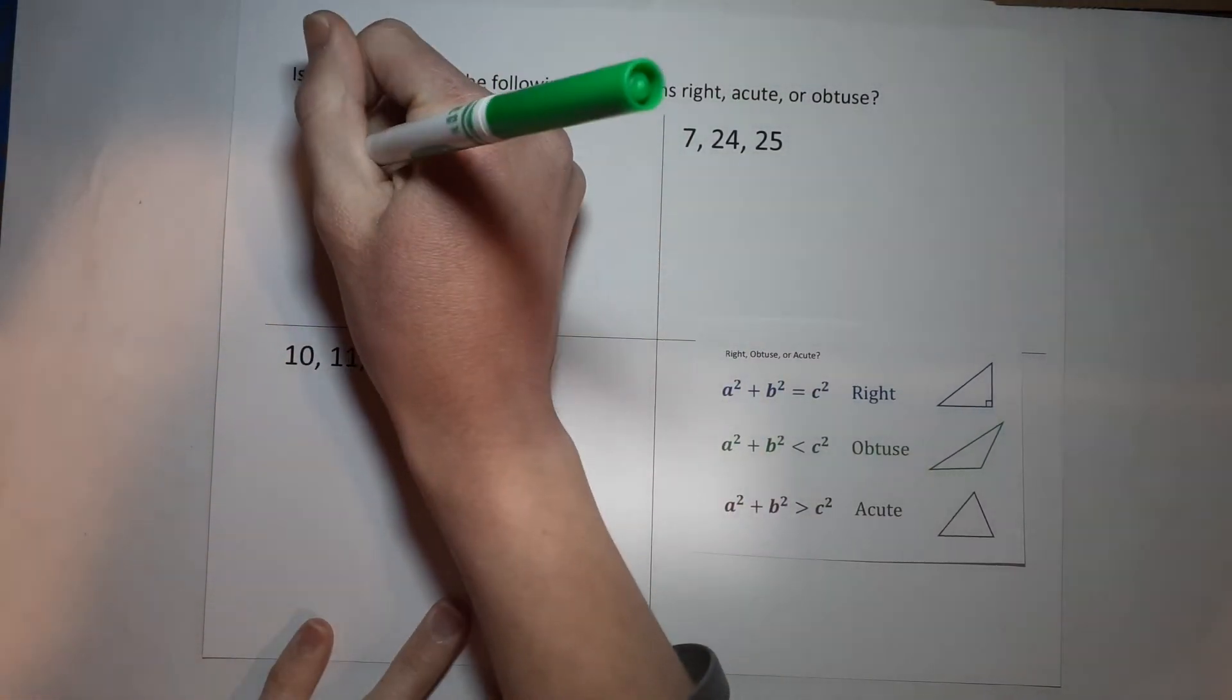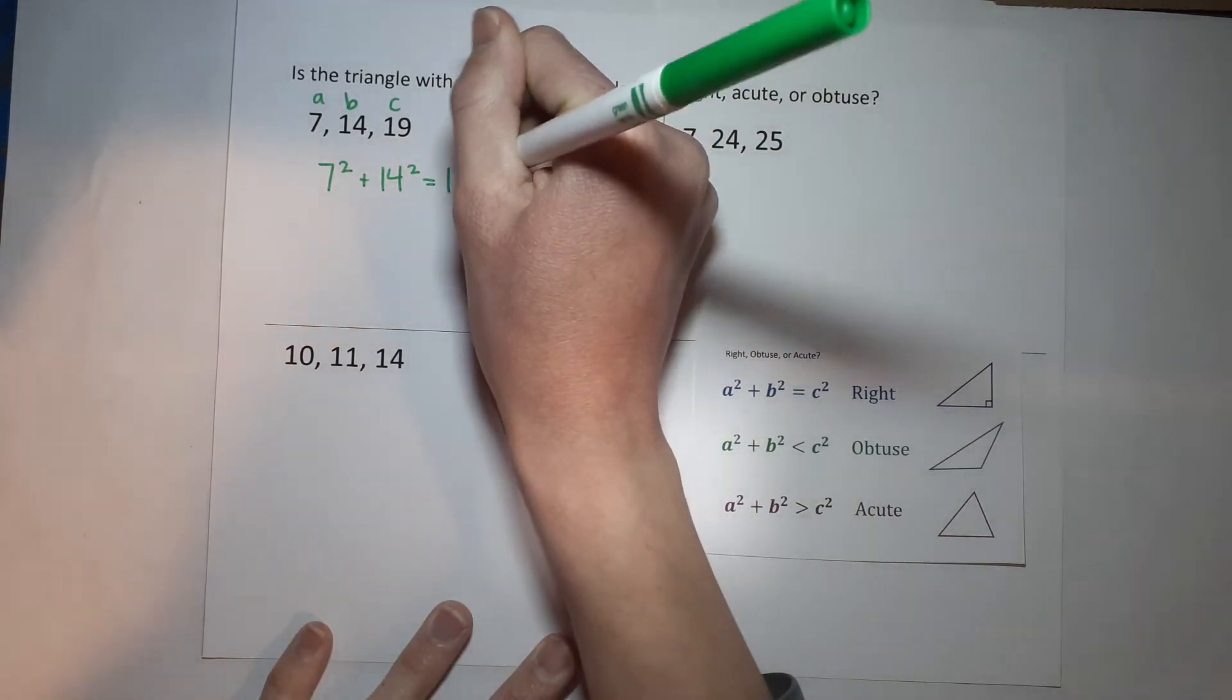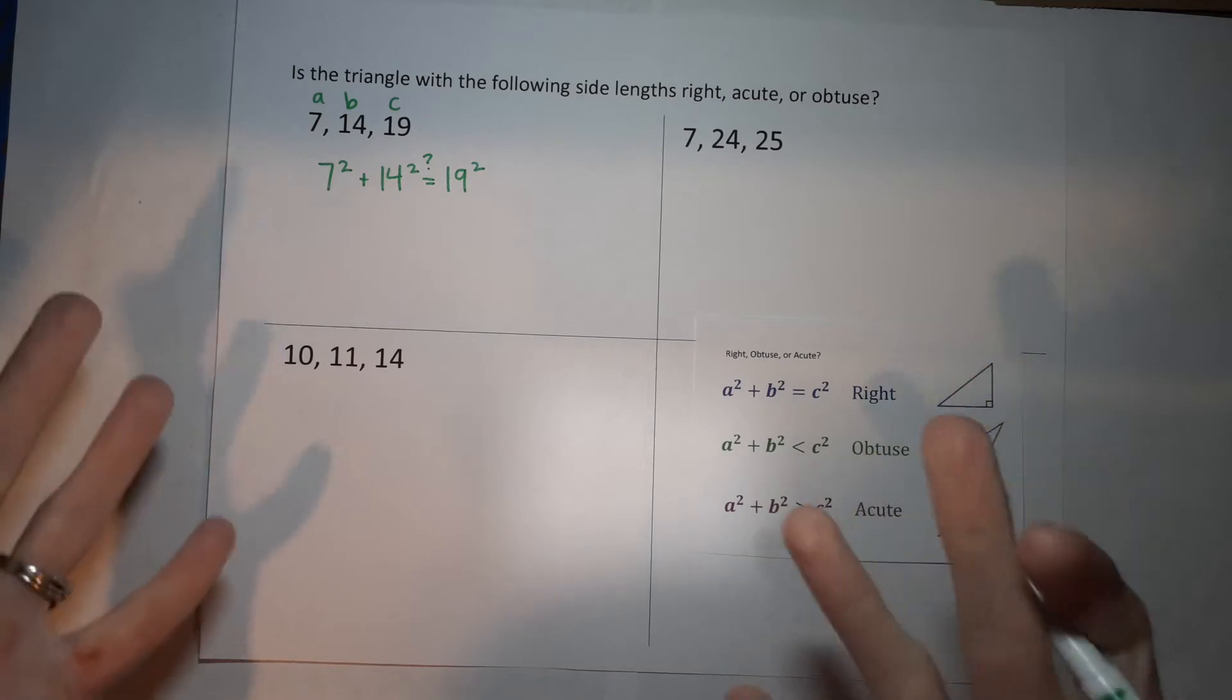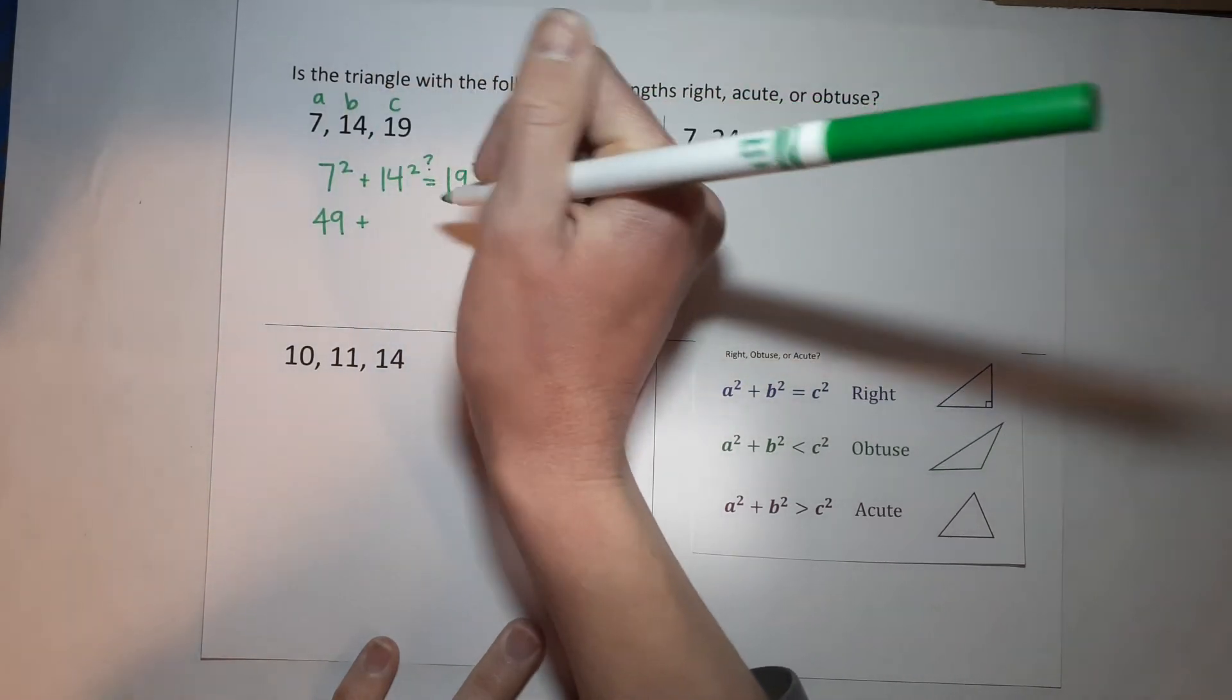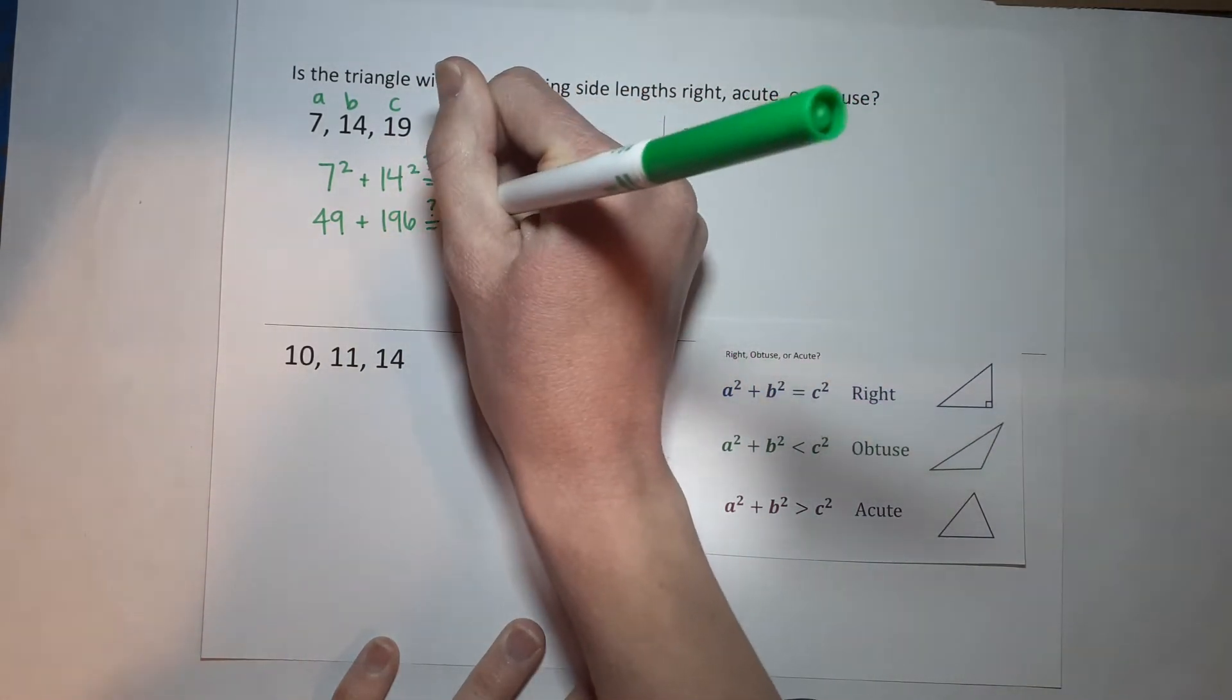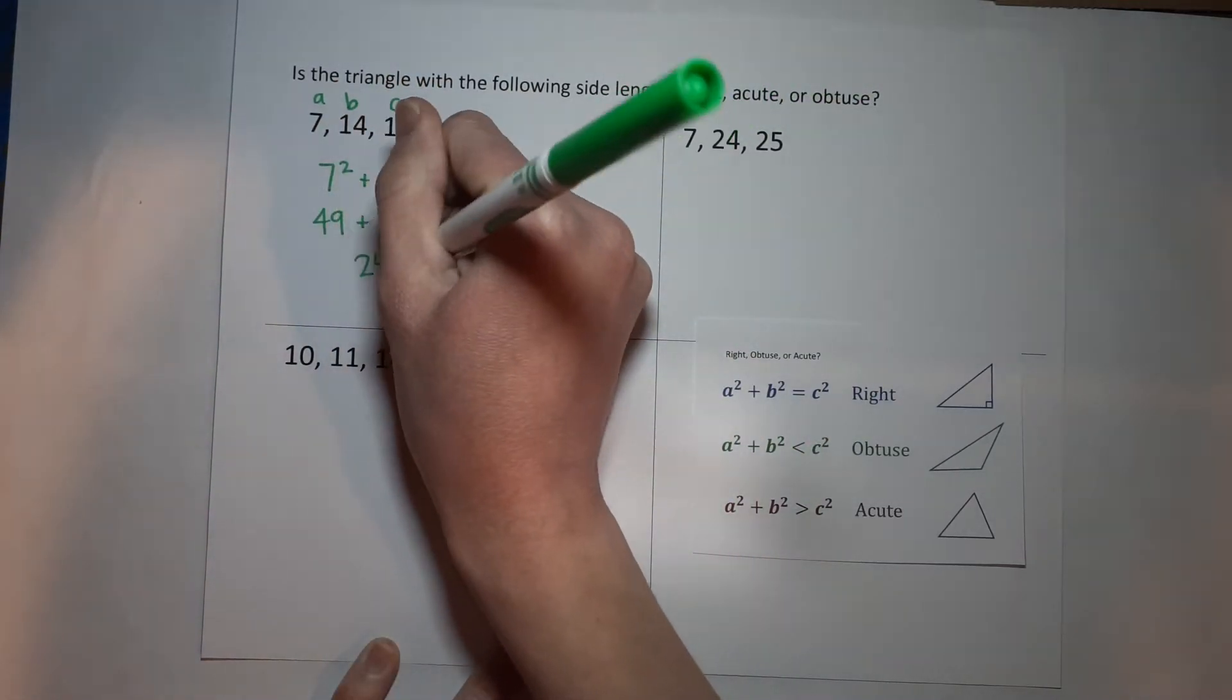So I'm going to do a squared, which is 7 squared, plus b squared, so plus 14 squared, equals c squared, which is 19 squared. Now I wrote equals, but we actually don't know if these are equal to each other, so I'm going to just put like a little question mark above it, like we're seeing if these are equal. So 7 squared gives me 49, plus 14 squared gives me 196. We are seeing if this is equal to 19 squared, which is 361. Now 49 plus 196 is 245.